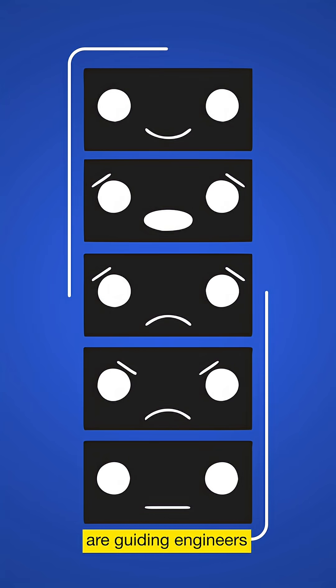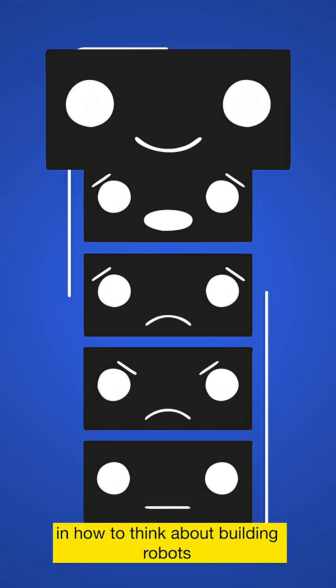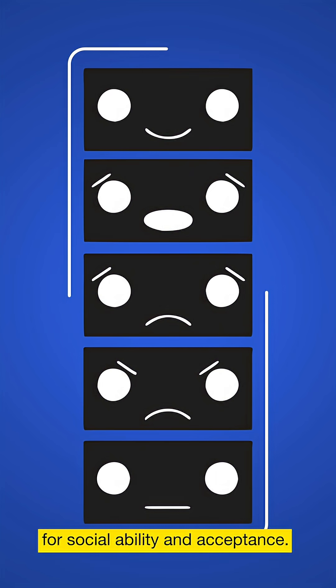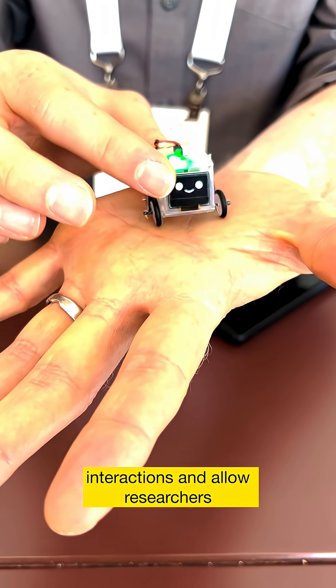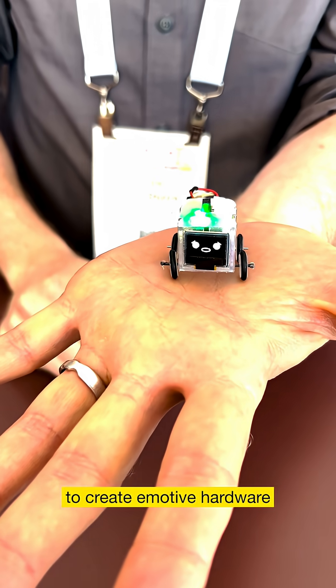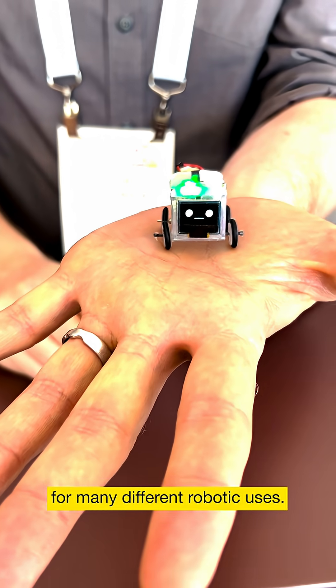These social interactions are guiding engineers in how to think about building robots for social ability and acceptance, hoping to smooth out those human-robot interactions and allow researchers to create emotive hardware for many different robotic uses.